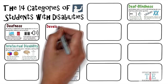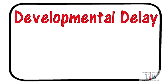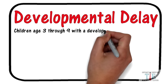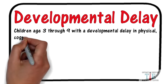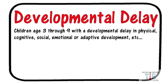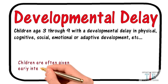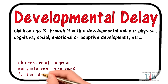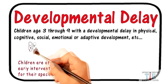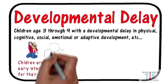Fifth on the board: developmental disability. These are defined as children aged 3 through 9 with developmental delay in physical, cognitive, social, emotional, or adaptive development. The good news is that these children are often given early intervention services for their specific needs. These children are less developed mentally or less developed physically when compared to children of the same age.